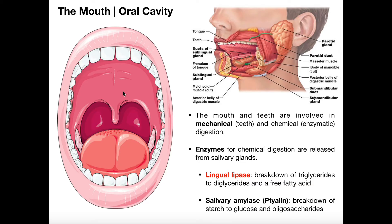One, saliva secretes antibodies like IgA. IgA is a type of antibody that will bind to any foreign material such as bacteria and basically tag it for destruction by the immune system. We want to prevent as many harmful pathogens from getting into our body as possible, and since we're eating, that's a really good opportunity for bacteria to enter. So IgA secreted by these glands will bind to those bacteria and tag them for destruction. There's also lysozyme — an enzyme that will actually destroy bacteria — which is also very important.